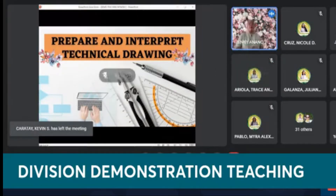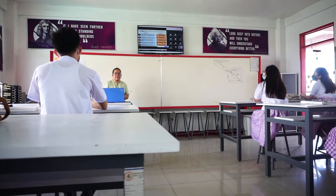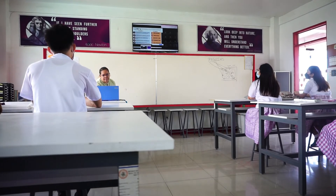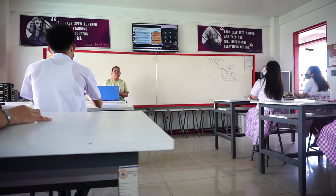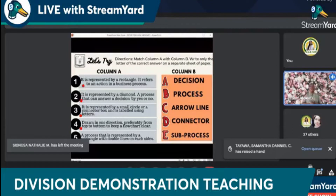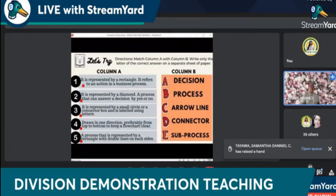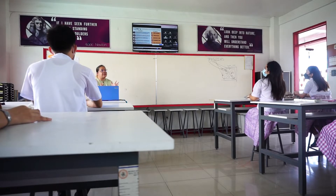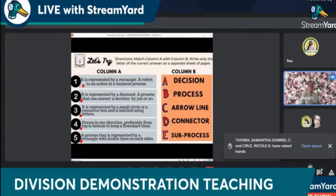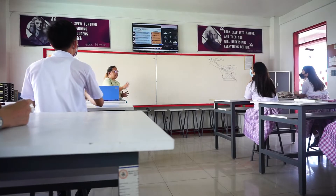Our topic for today, for this week, is all about how to prepare and interpret technical drawings, specifically flowcharts. But before that, let's have our Let's Try activity to assess your prior knowledge about what we're about to discuss this week and to check if you've been reading your modules in advance. The direction is to match Column A with Column B. Those who are face to face will raise their hands, and those in Google Meet will answer as well.